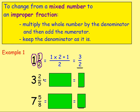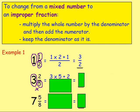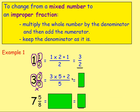Let's try three and two fifths. Do the same thing: whole number multiplied by the denominator — three times five — then add the numerator, which is two, and keep the denominator as five. Three times five is fifteen, add two gives seventeen — so three and two fifths is the same as seventeen over five.